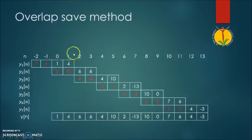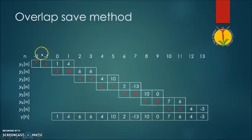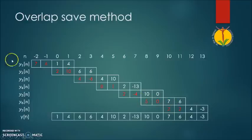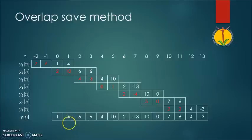After obtaining all the circularly convolved output signals y1(n), y2(n), y3(n), and so on, we represent them together and discard the first M-1 samples from each output block. So from y1 we discard samples 7 and 6; from y2 we discard samples 2 and 10; from y3 we discard samples 4 and 5; and likewise for all blocks. The remaining samples are written sequentially, giving us y(n), which is the digitally filtered output of the long data sequence. This is the overlap save method.